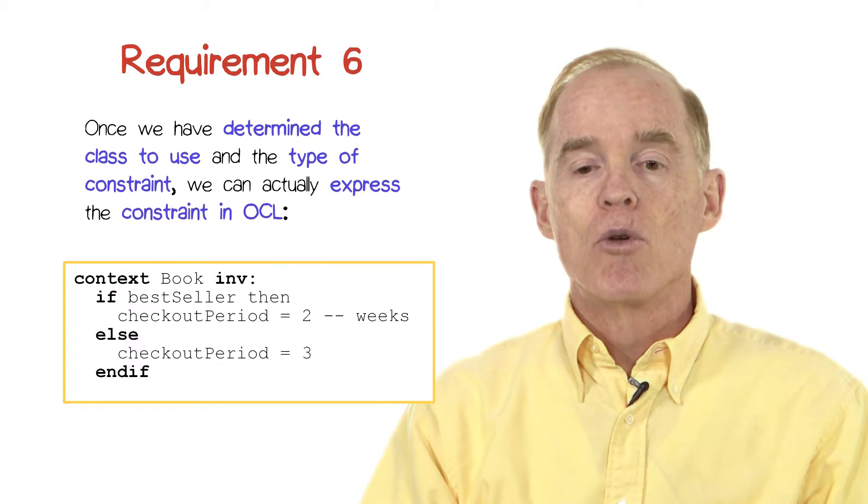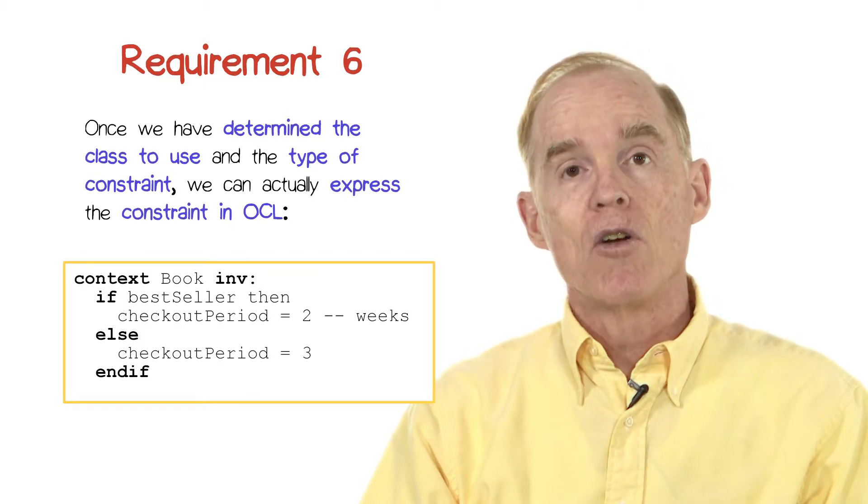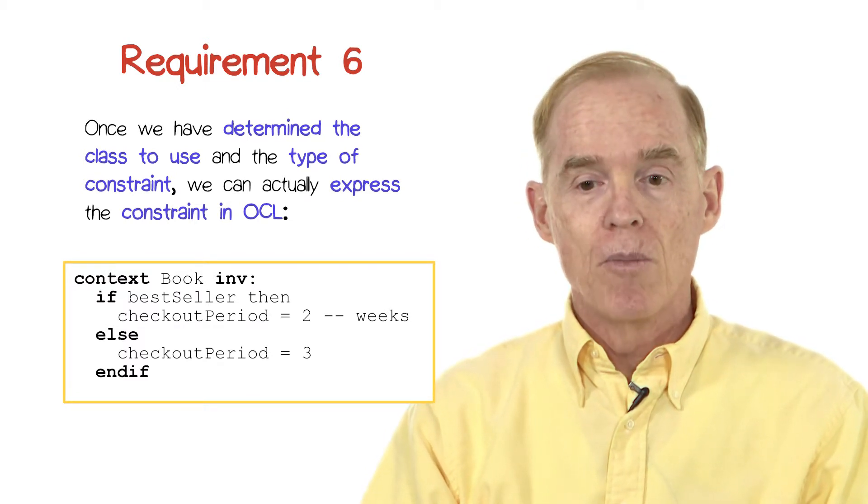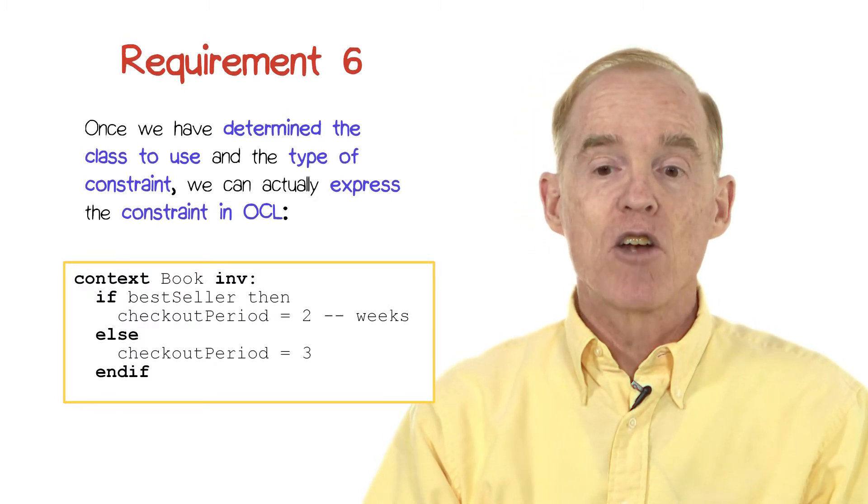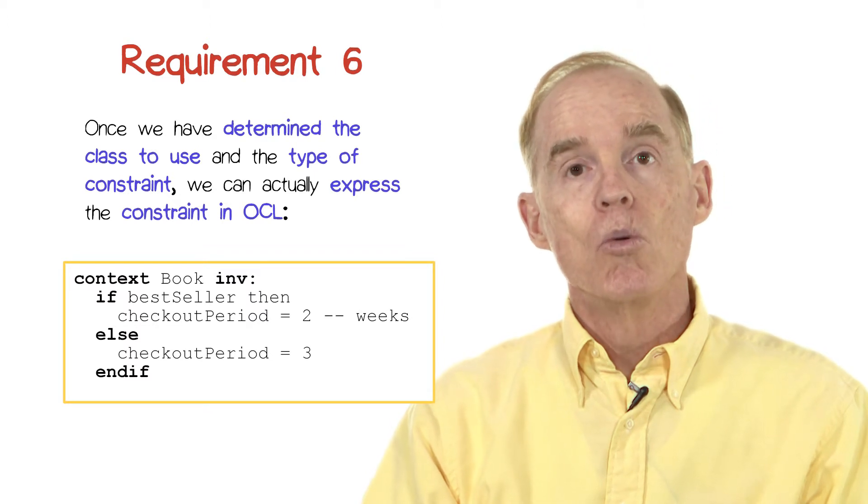And so if we read through it, it says, if bestseller, and recall that bestseller was a Boolean, then it is the case that the checkout period, which is an attribute of book, is two weeks.